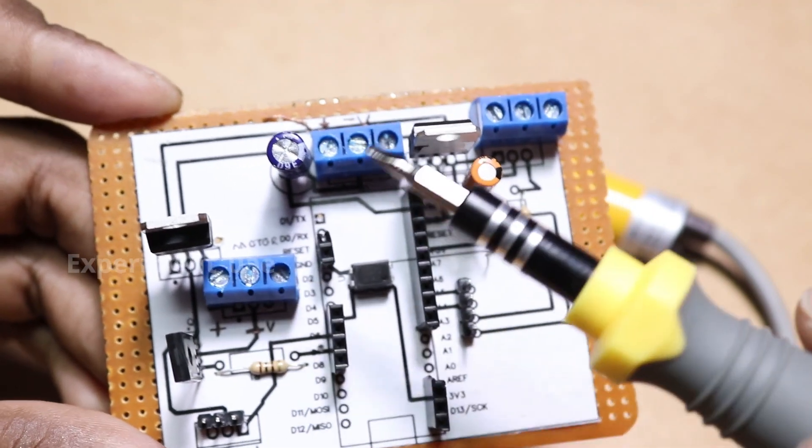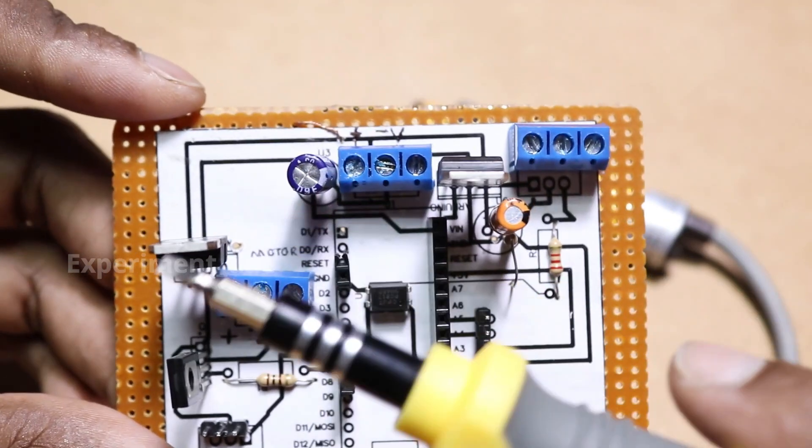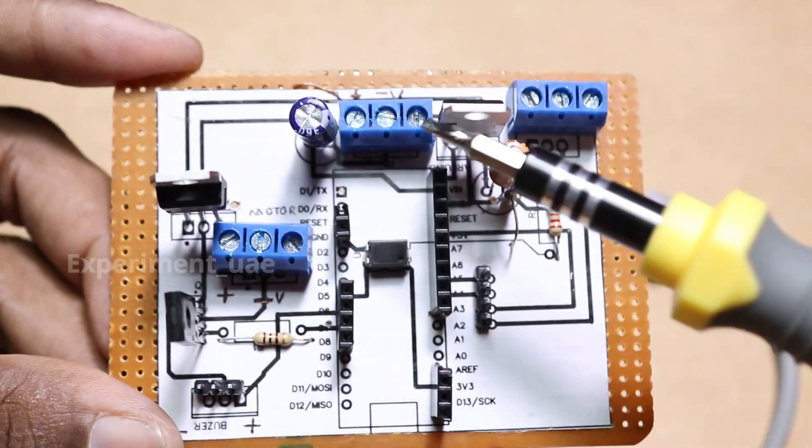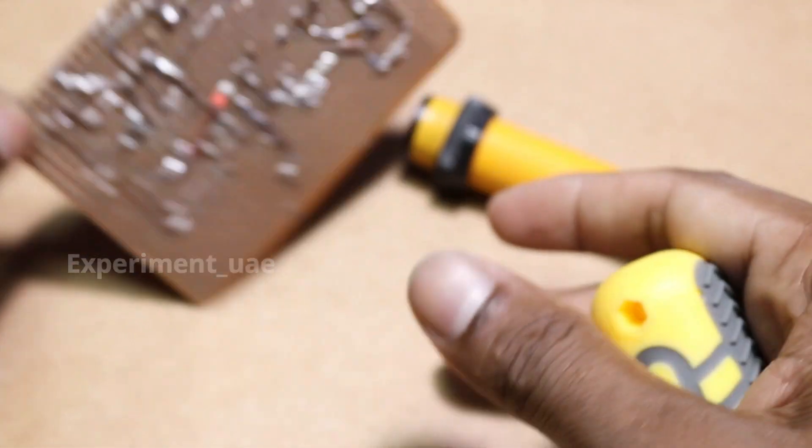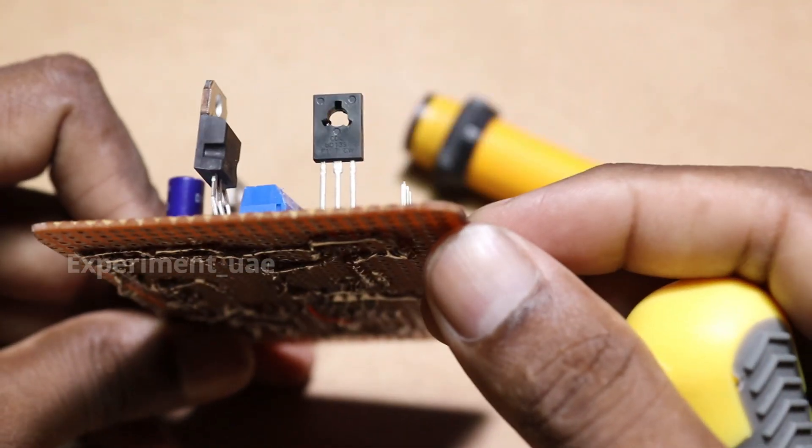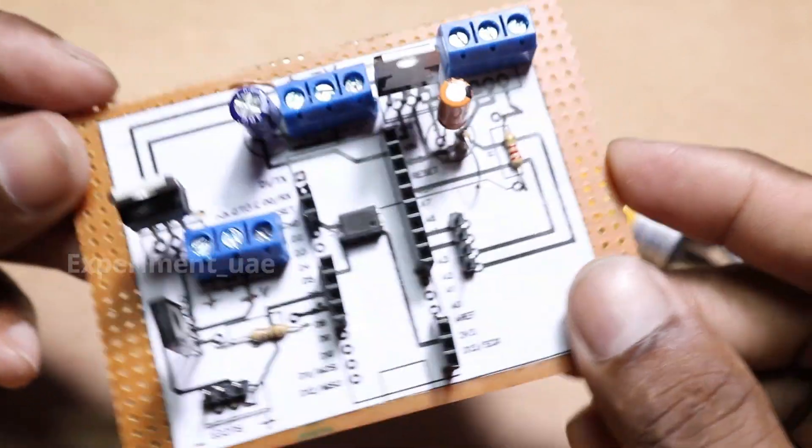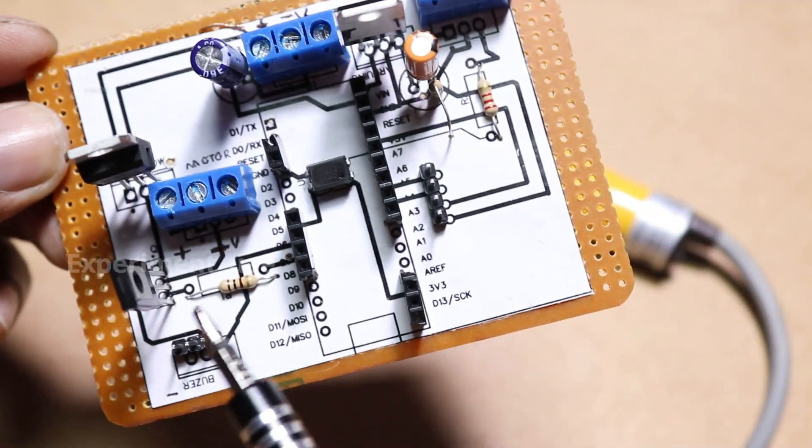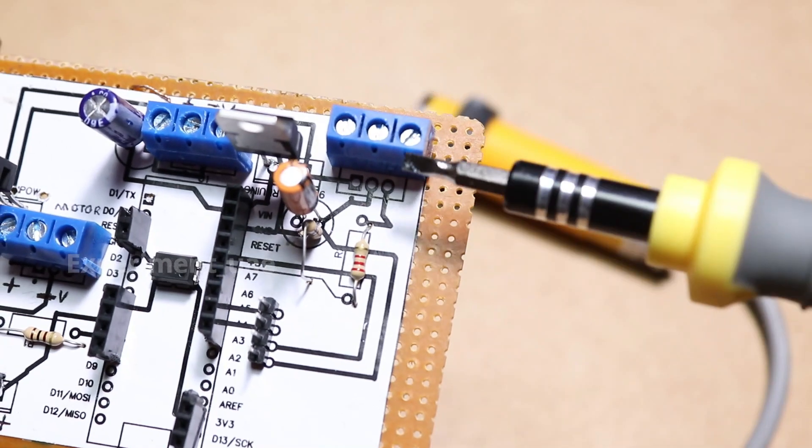One wire goes to the motor through the motor driver. This motor driver uses 5V. The motor driver is a BD-139 transistor. BD-139 is the transistor we're using as the motor driver.